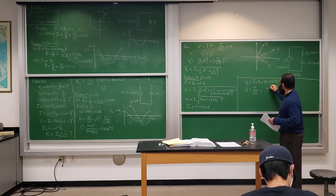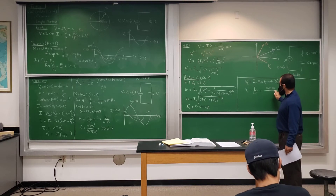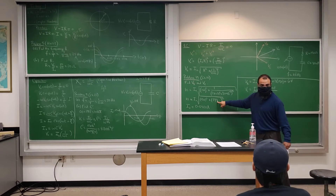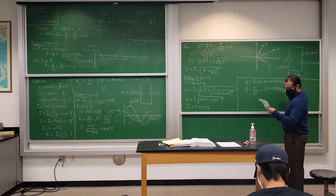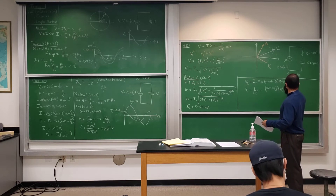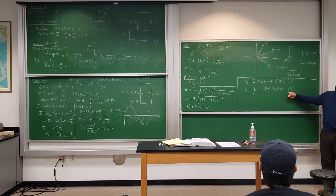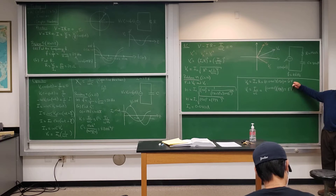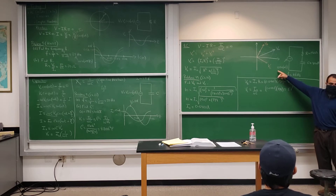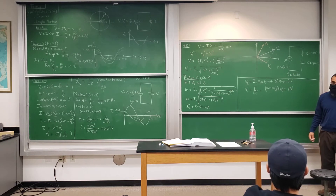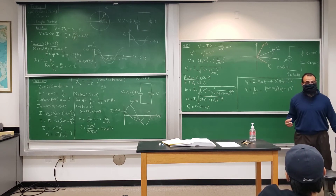I0 is 0.0401 and 1 over omega C is 199, so Vc is about 8 volts. The maximum voltage across the capacitor is 8 volts, and across the resistor is 6 volts. Their sum is 14, but the source is only 10. This doesn't concern us because they're never at maximum at the same time — there's a 90 degree angle between them.